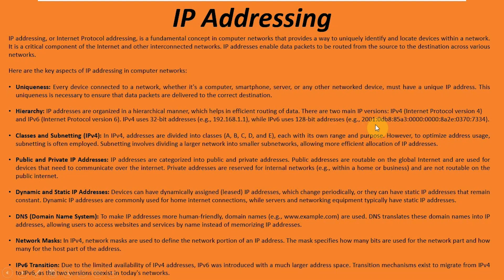There is a way to shorten the IPv6 address to make it a little more user friendly. Now, classes and subnets — this is for IPv4. IPv4 addresses like 192.168.1.1 are broken down into four octets, four different sections. These are also divided into classes A, B, C, D, and E, each with its own range and purpose depending on your application.